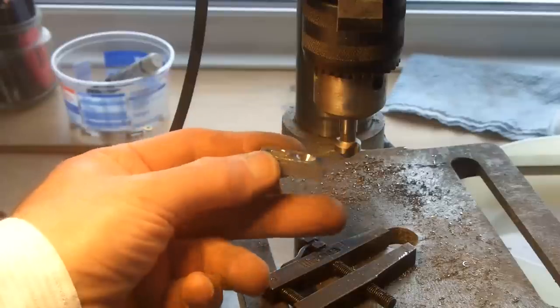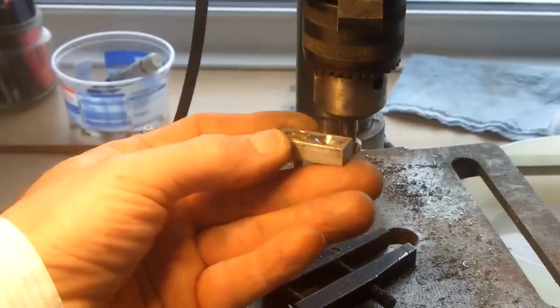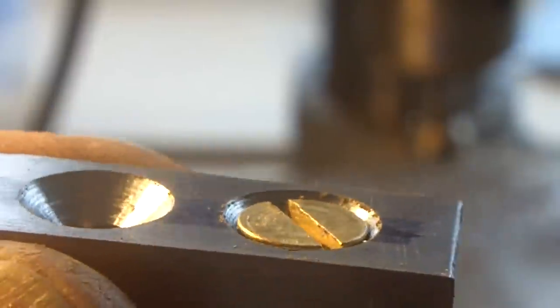That's the 4mm clearance holes and I've just got to countersink it now. Okay, I've got those two countersunk now. What I've done is countersunk them just a little bit below the surface because this is going to go on the bottom of the pendulum and it's going to swing in an arc.